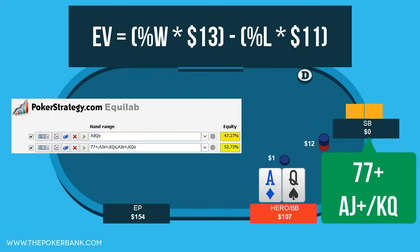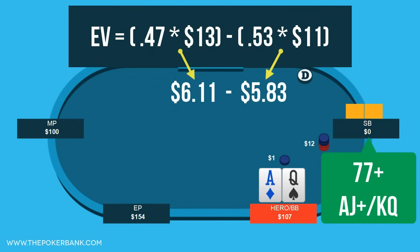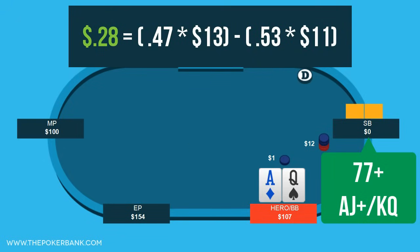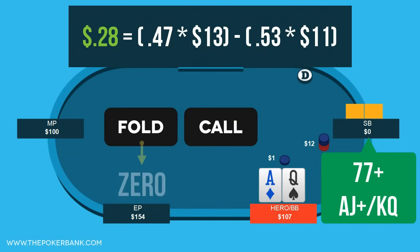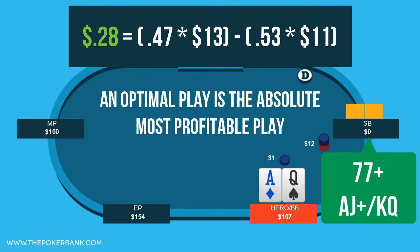So in this hand we expect ace-queen to win 47% of the time and lose the other 53% of the time. Now we plug everything in, solve it, and confirm that a call is plus EV here. Doing the math: $6.11 minus $5.83 gives us a plus $0.28 expected value. Looking at our two options — calling versus folding — a fold would be 0 EV because we don't make or lose anything, while a call is plus EV at 28 cents. This means a call is not only plus EV, it is also the optimal play against the range we assigned.